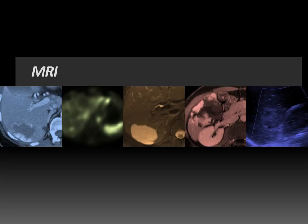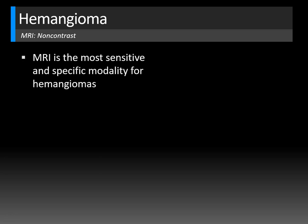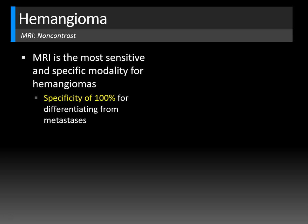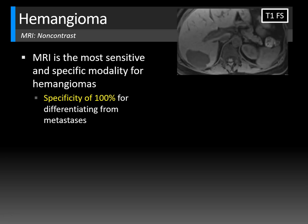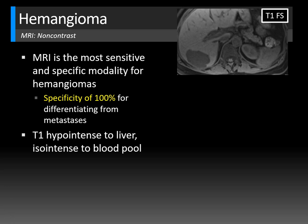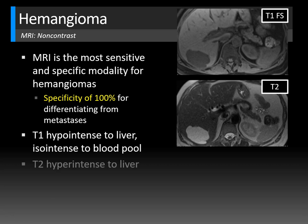MRI is actually the most sensitive and specific modality for the diagnosis of hemangioma, with a specificity of 100% for differentiating from metastases. On non-contrast imaging, hemangiomas tend to be hypointense to the liver parenchyma and isointense to the blood pool on T1 fat-suppressed images — similar to the CT isodensity to blood pool.